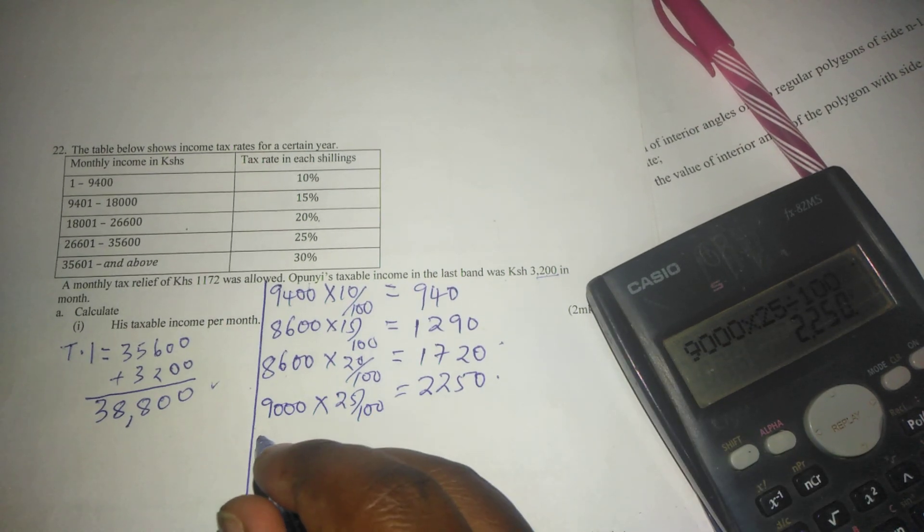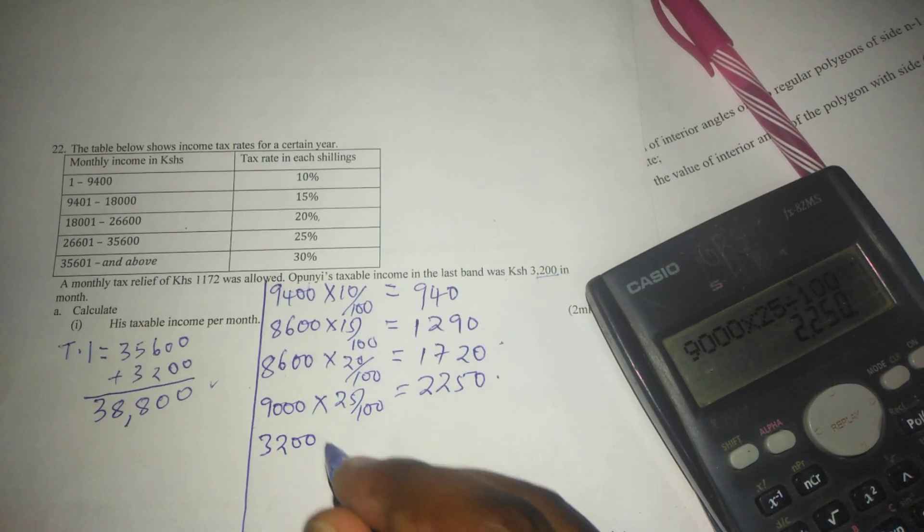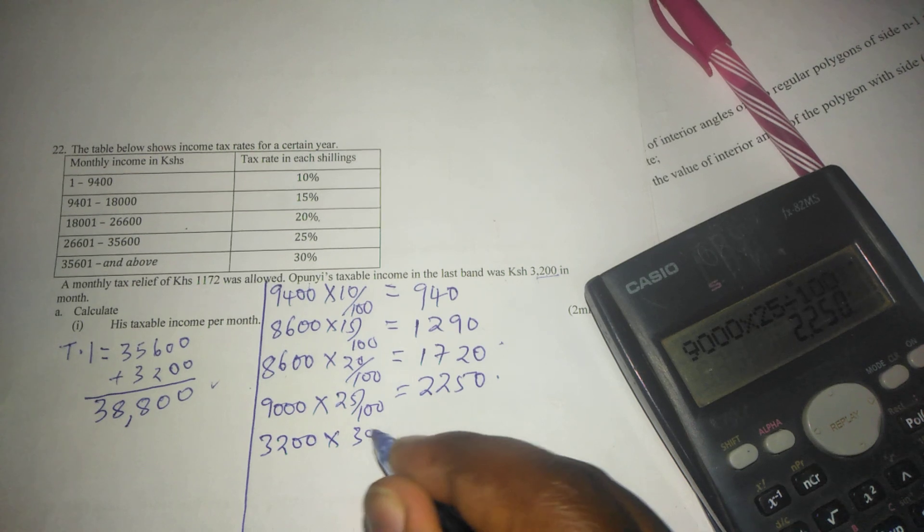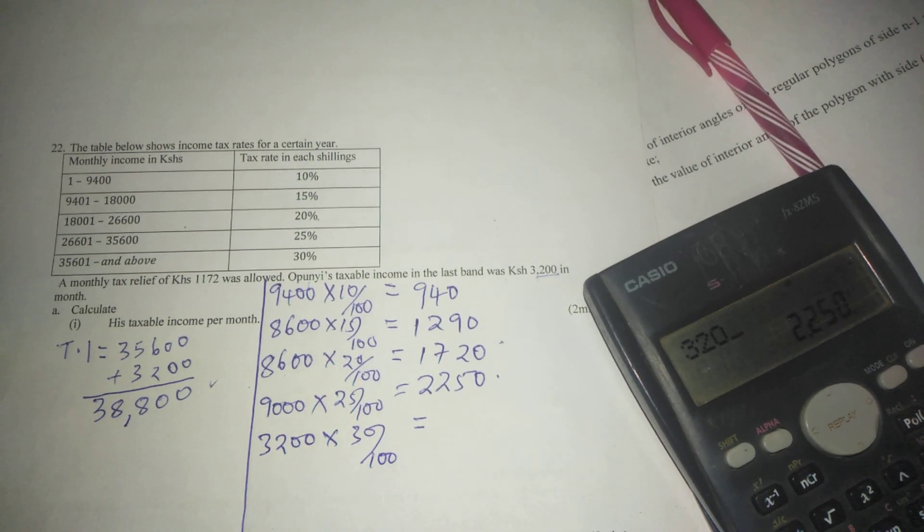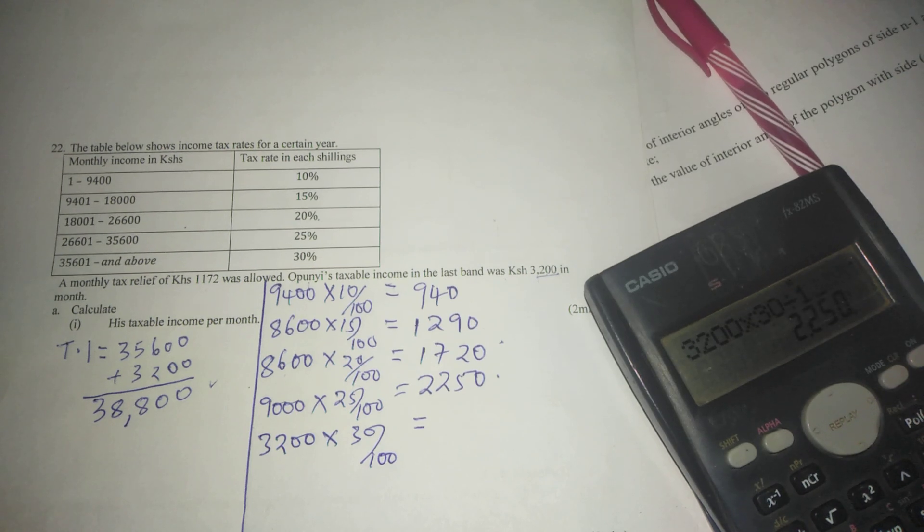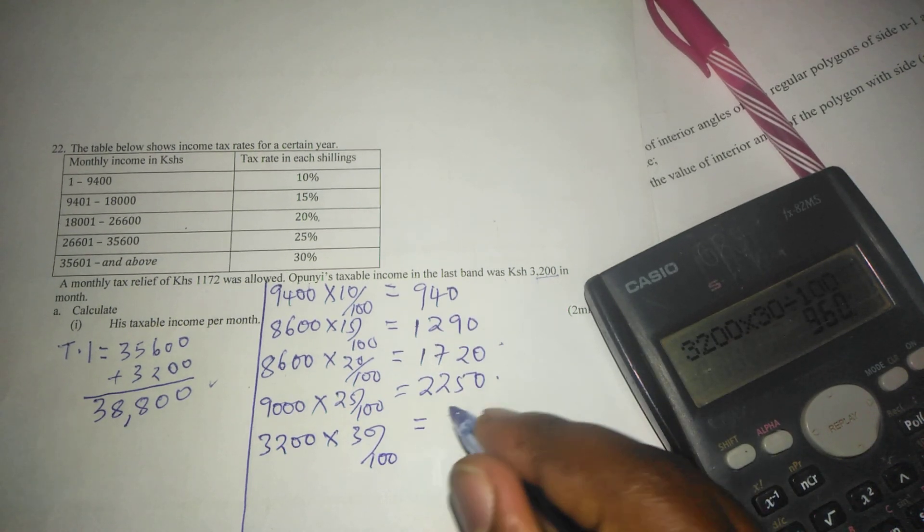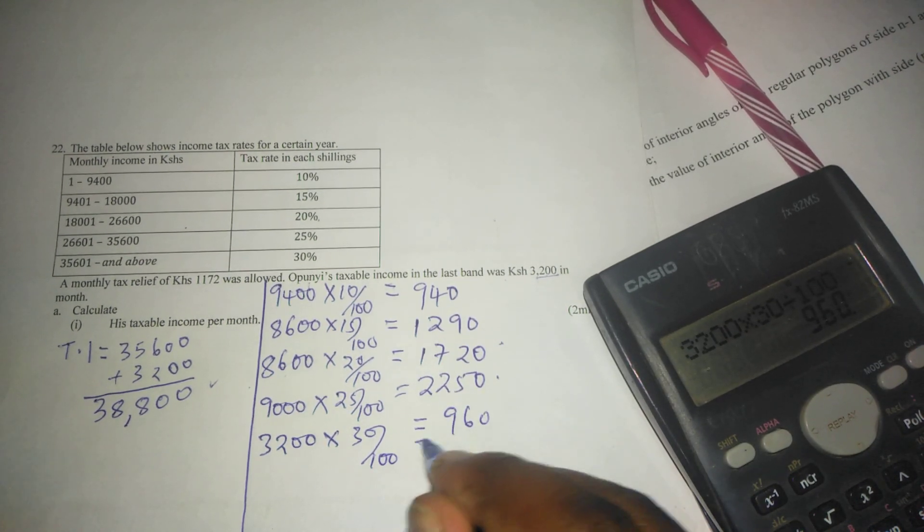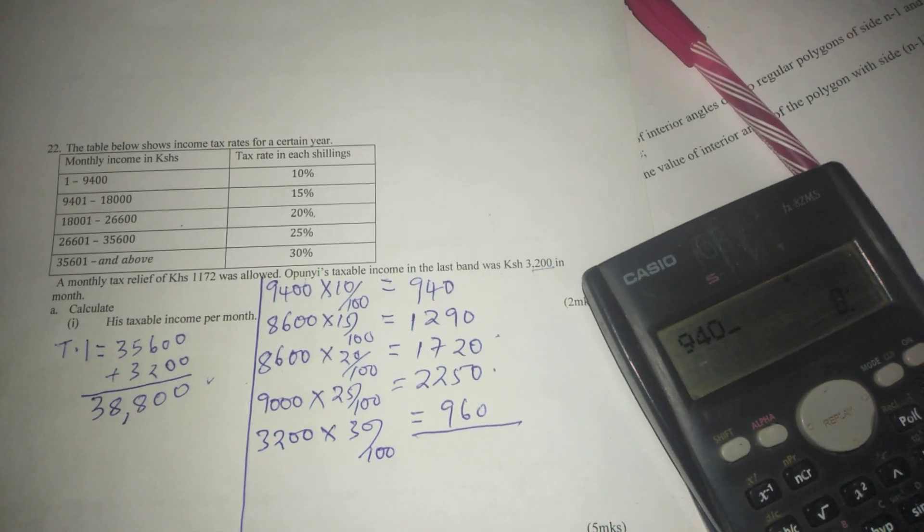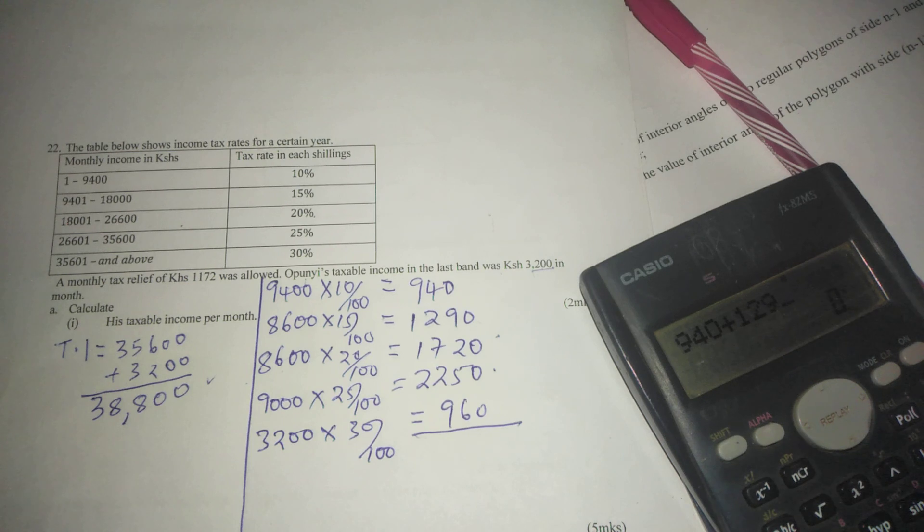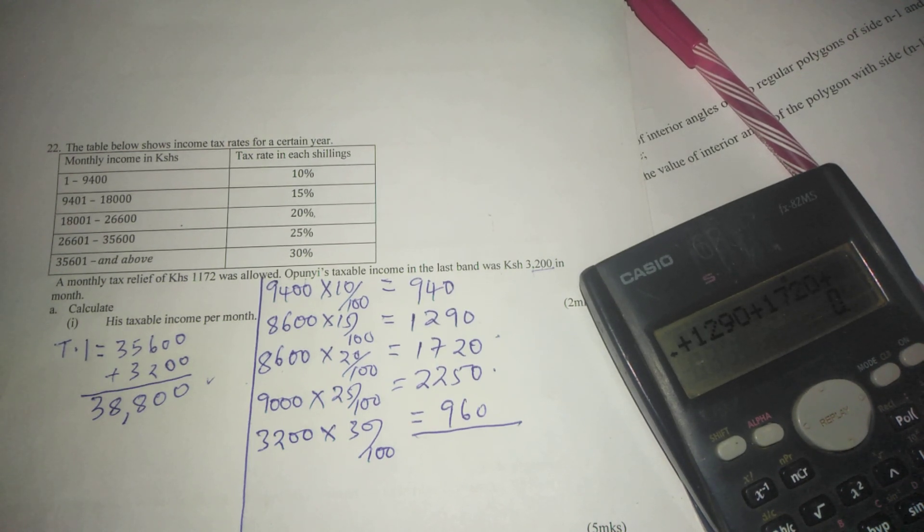Finally, in the last bracket it was already given that we have 3,200 in the last bracket times 30 percent. This one is taxed at 30 percent, giving us 960. So the total payable tax is going to be when we add all the taxes in the brackets.